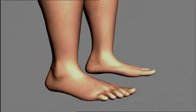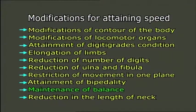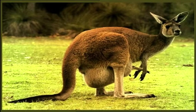Attainment of bipedality: human feet have adapted for bipedal movement. Bipedality involves better development of hind limbs and reduction of forelimbs. Maintenance of balance: in bipedal animals, maintenance of equilibrium is essential. In semi-erect bipedal animals like kangaroos, the tail helps to counterpoise the body.